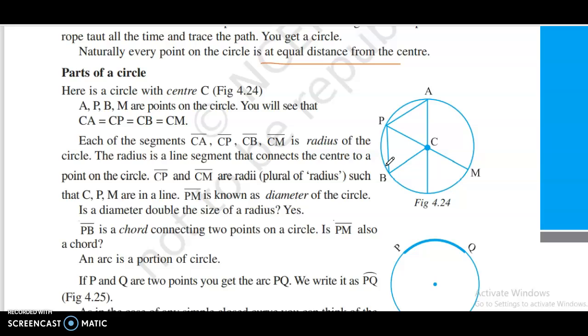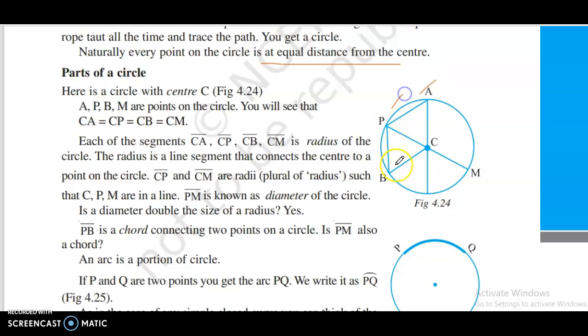Here is a circle with center C, figure 4.24. A, B, M are points on the circle. You will see that CA equals CB equals CM. Each of the segments CA, CB, CM is a radius of the circle. The radius is a line segment that connects the center point to a point on the circle.